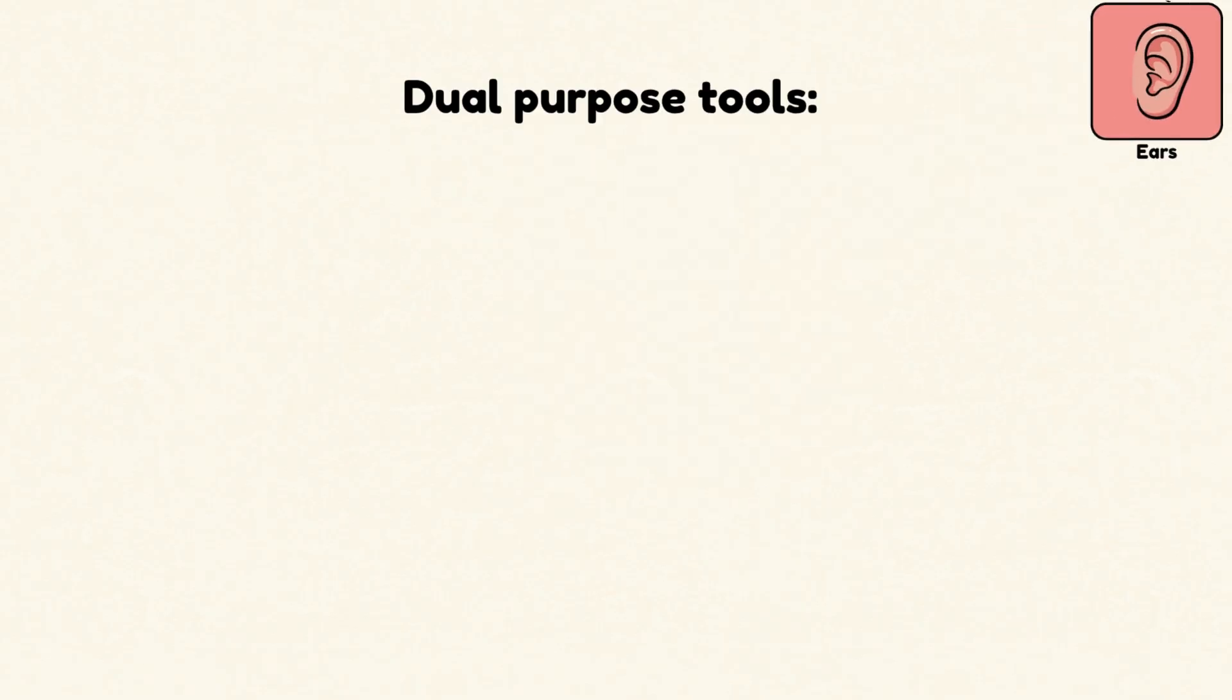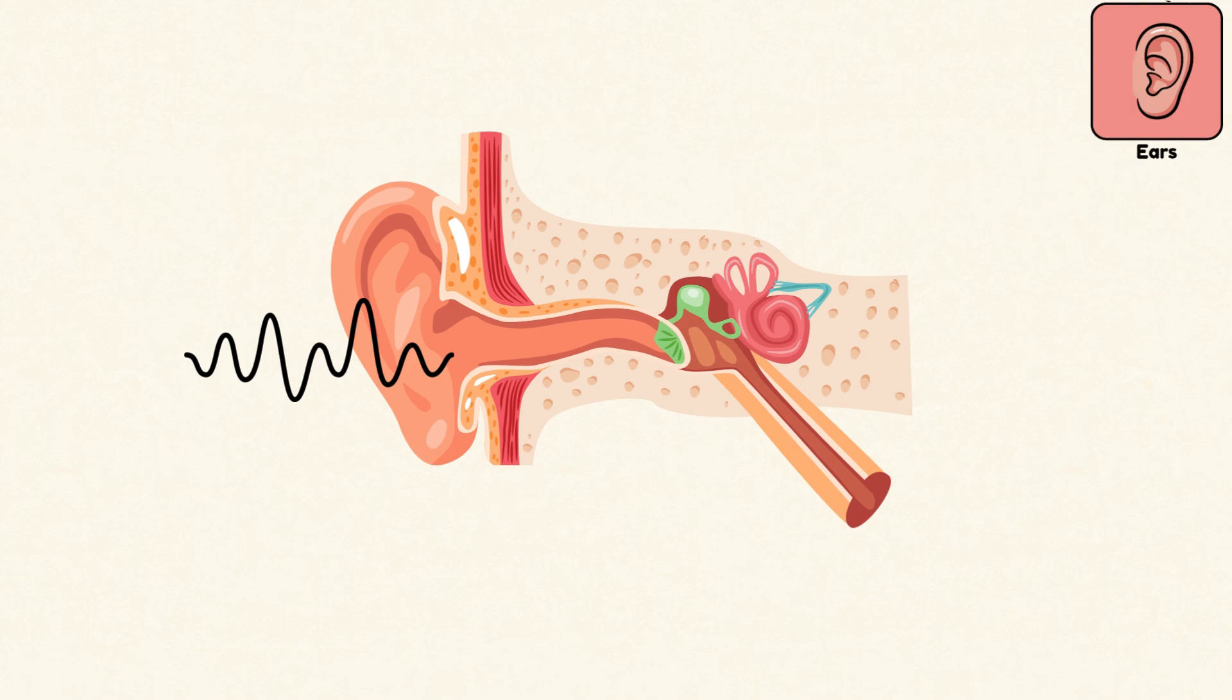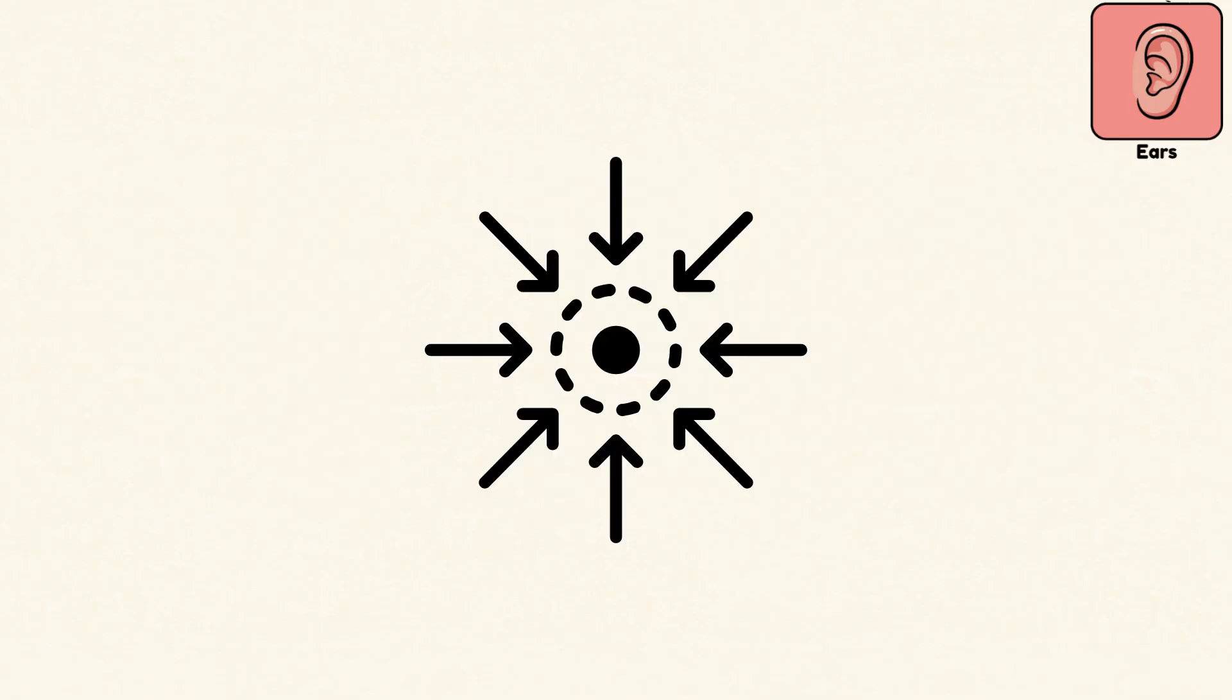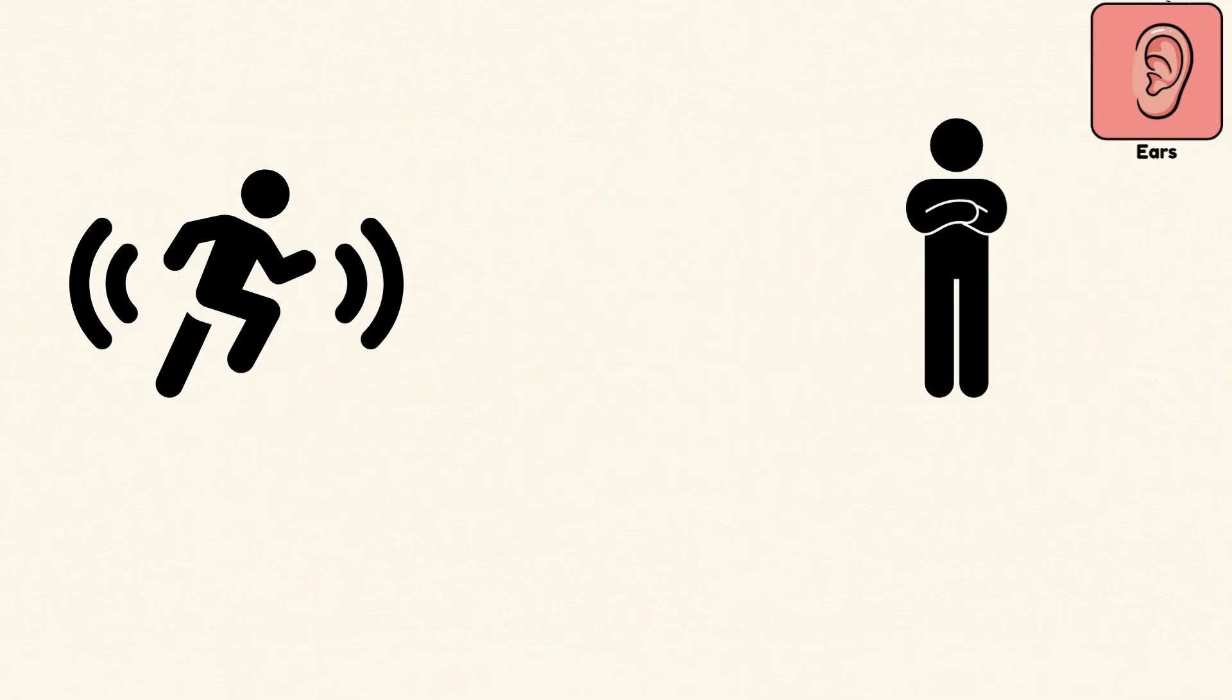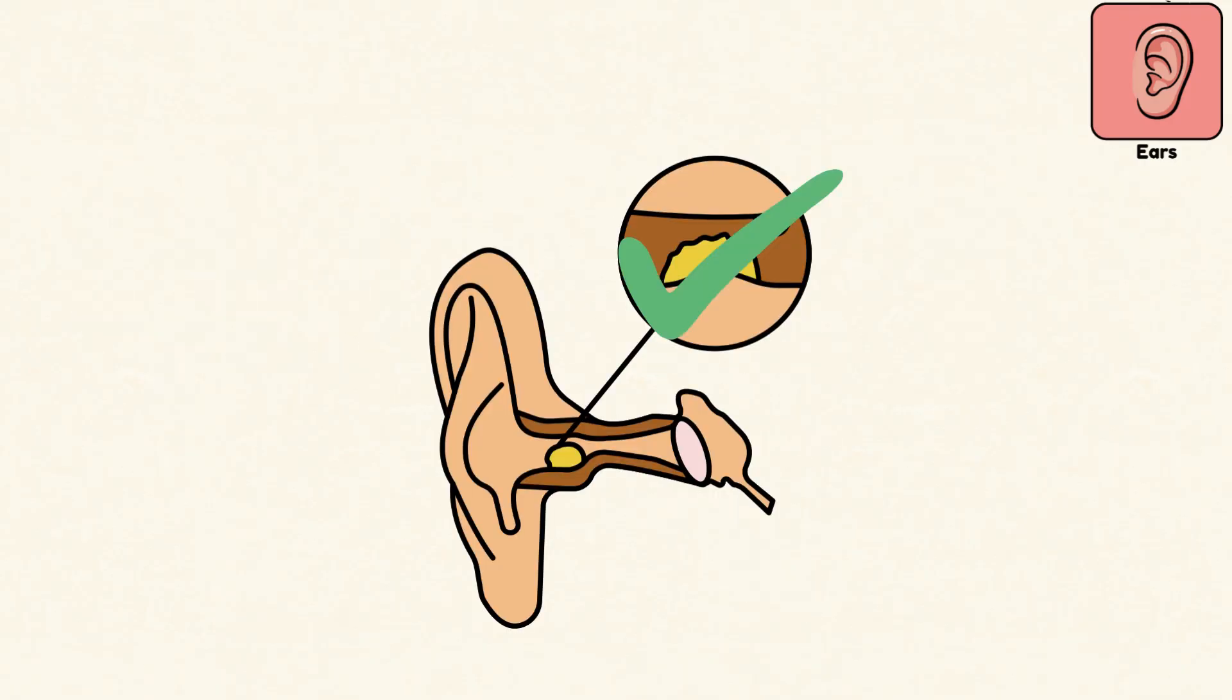Ears. Your ears are dual-purpose tools: sound detectors and balance centers. Sound waves enter the ear canal, vibrate the eardrum, and move through three tiny bones to the cochlea. There, sound becomes an electric signal for the brain. But deep inside, your ears also track motion and orientation, so you don't fall over every time you move. And yes, earwax is normal. It's your ears cleaning themselves.